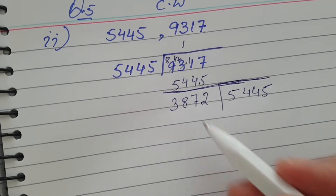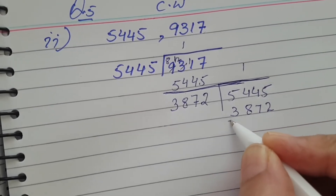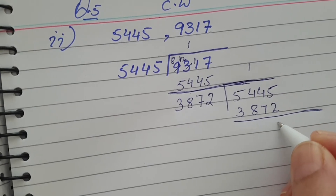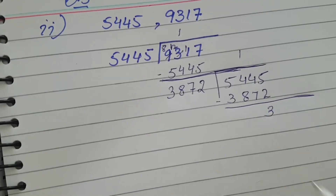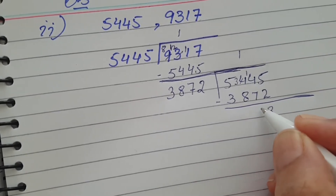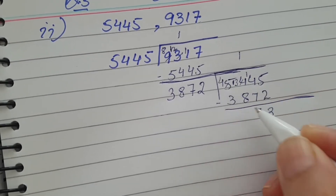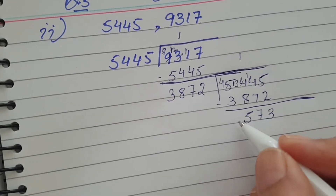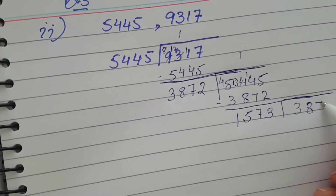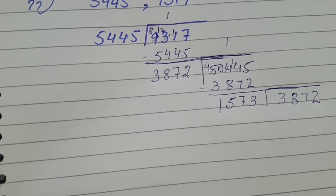3872 one time is 3872, because two times would give a greater number. Do the subtraction to get the next remainder: 5445 minus 3872. Working through the subtraction — borrowing where needed — you get 1573 as the remainder. The new dividend becomes 3872.